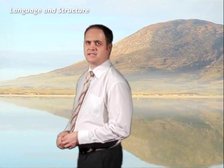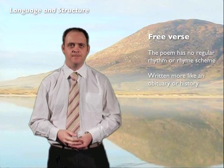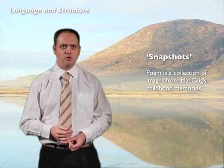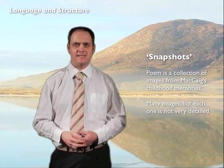Let's finish by looking at some of the key points of language and structure in the poem, which you could mention in your exam answer. The poem, like most in the free verse booklet, is written in free verse. This means the poem has no regular rhythm or rhyme scheme, and allows McCaig to write it more like a personal history or an obituary for his aunt. It's written in the first person, so that the reader understands this is the poet's very own personal experiences. The poem contains a series of snapshots, or images, from McCaig's childhood memories — there are many of these little images, each one not very detailed on its own, but put together they create a much more vivid picture of his aunt.